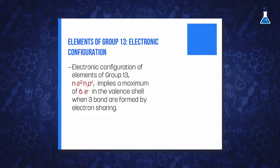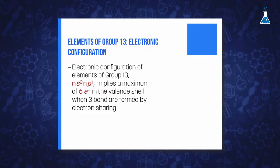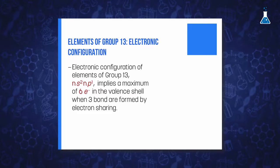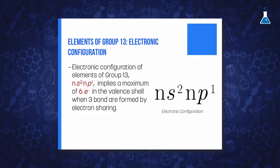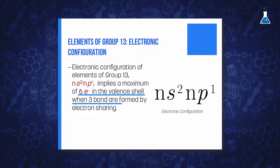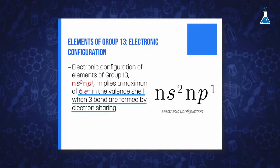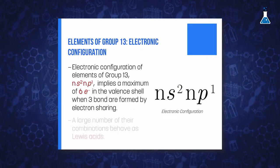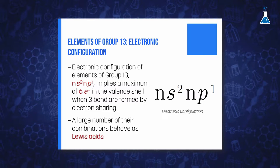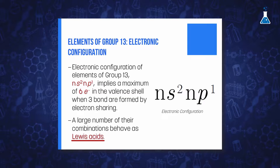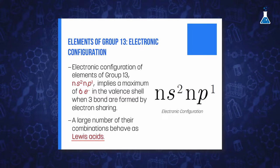One of the most distinctive features of the lighter Group 13 elements is the ns²np¹ electron configuration, which means a maximum of 6 electrons in the valence shells when 3 covalent bonds are formed by electron sharing. As a consequence, a large number of their compounds have an incomplete octet and behave as Lewis acids, being able to complete their octet by accepting a pair of electrons from a donor. In particular, the chemistry of Boron is dominated by what are called electron-deficient cluster compounds.